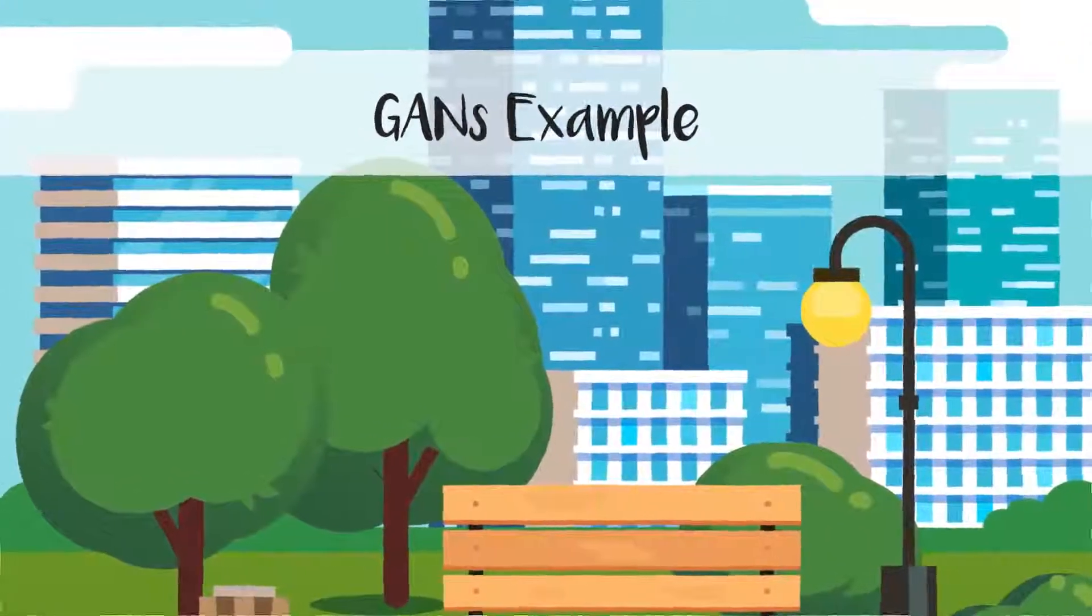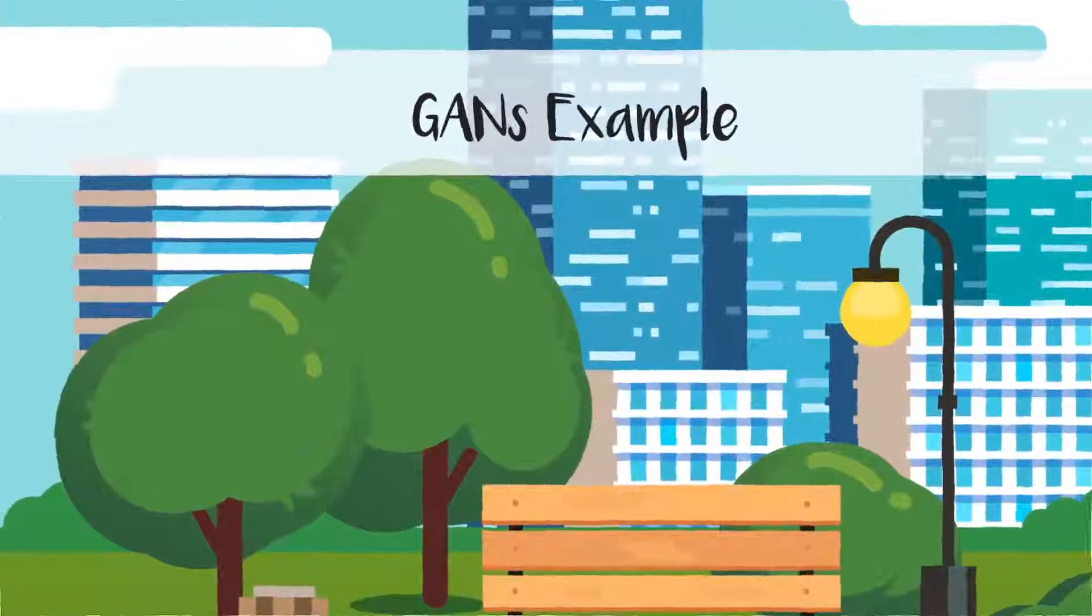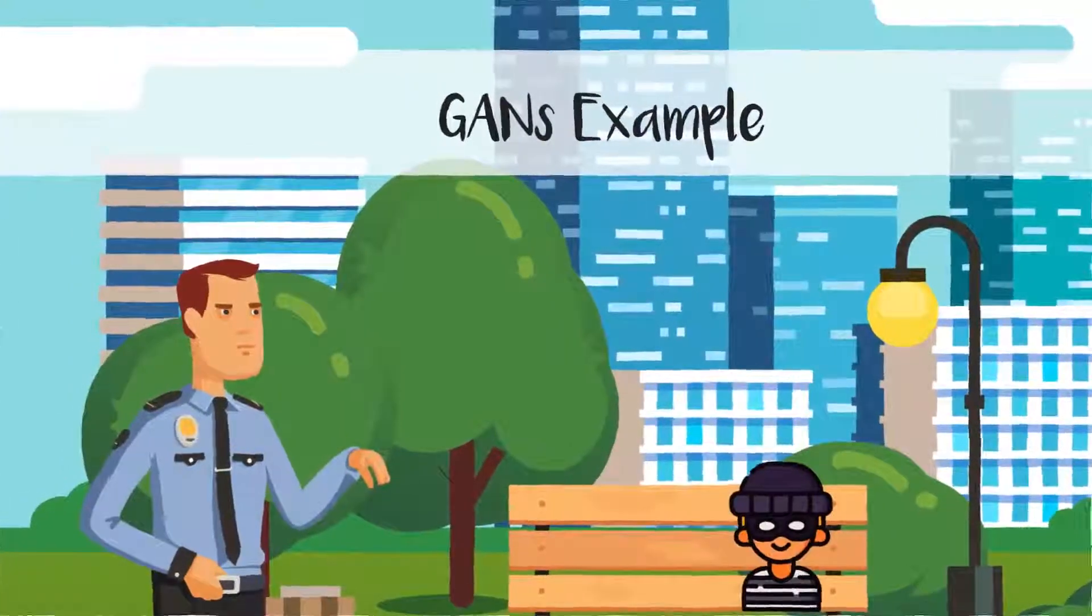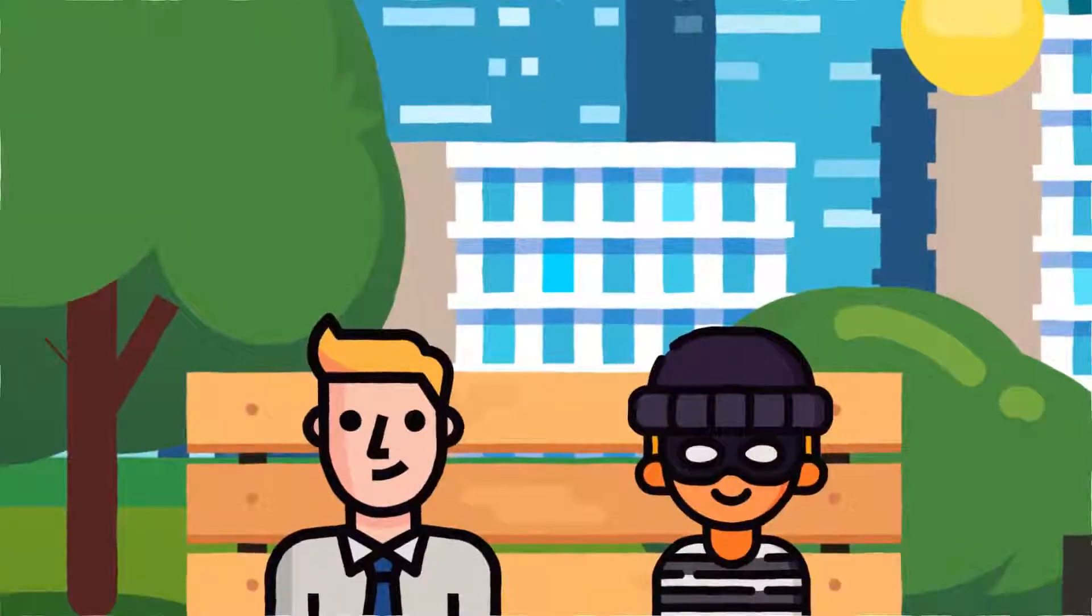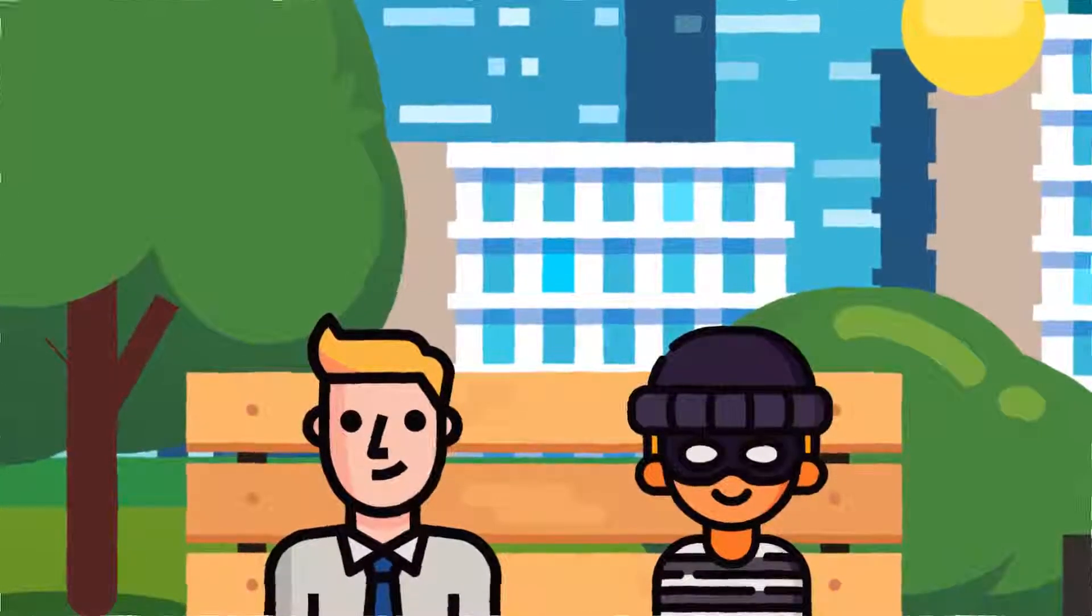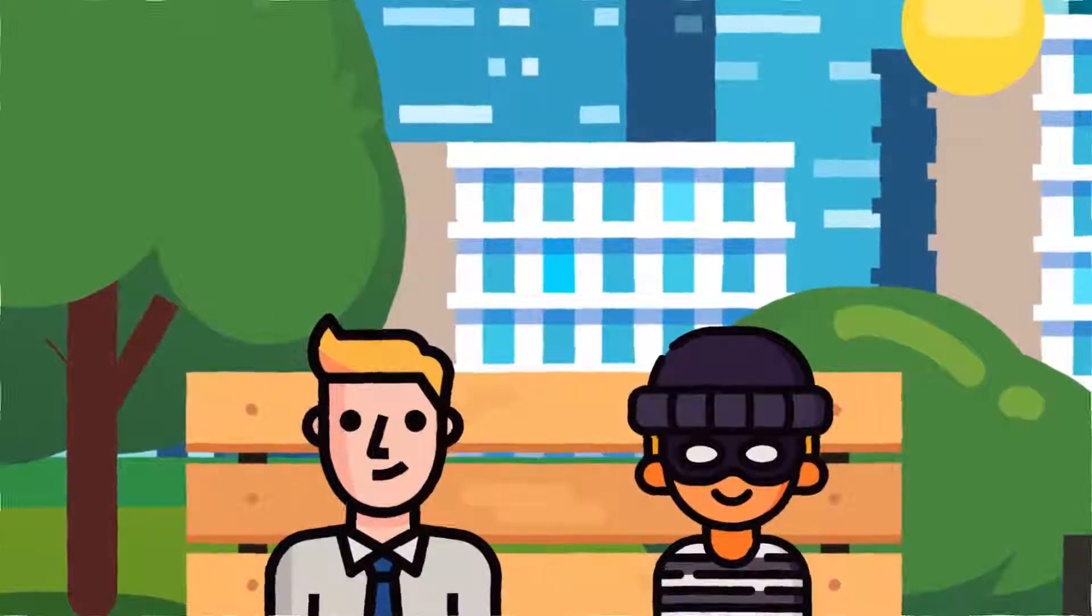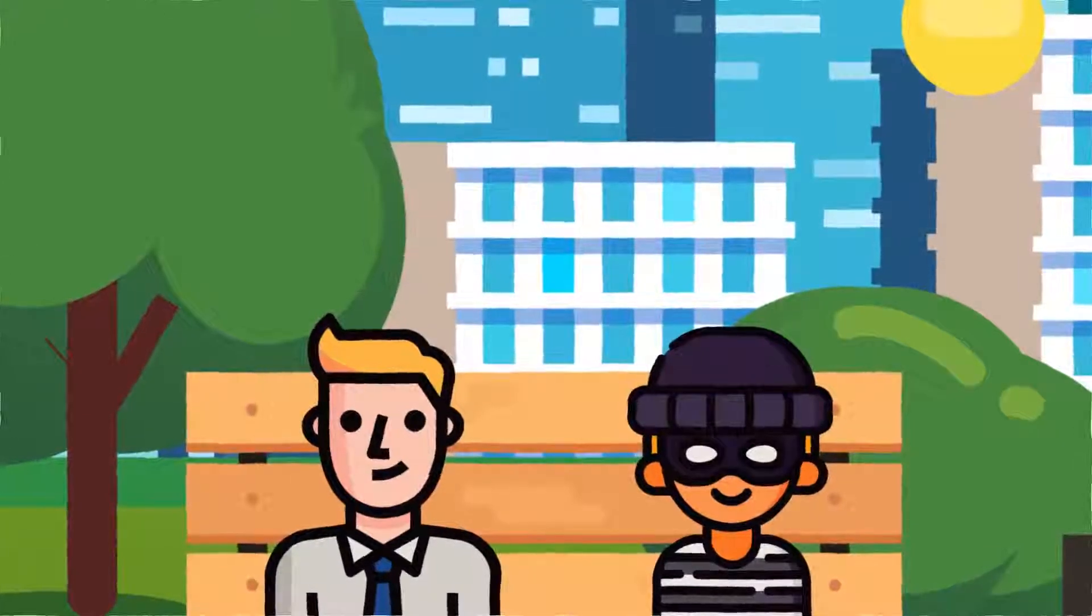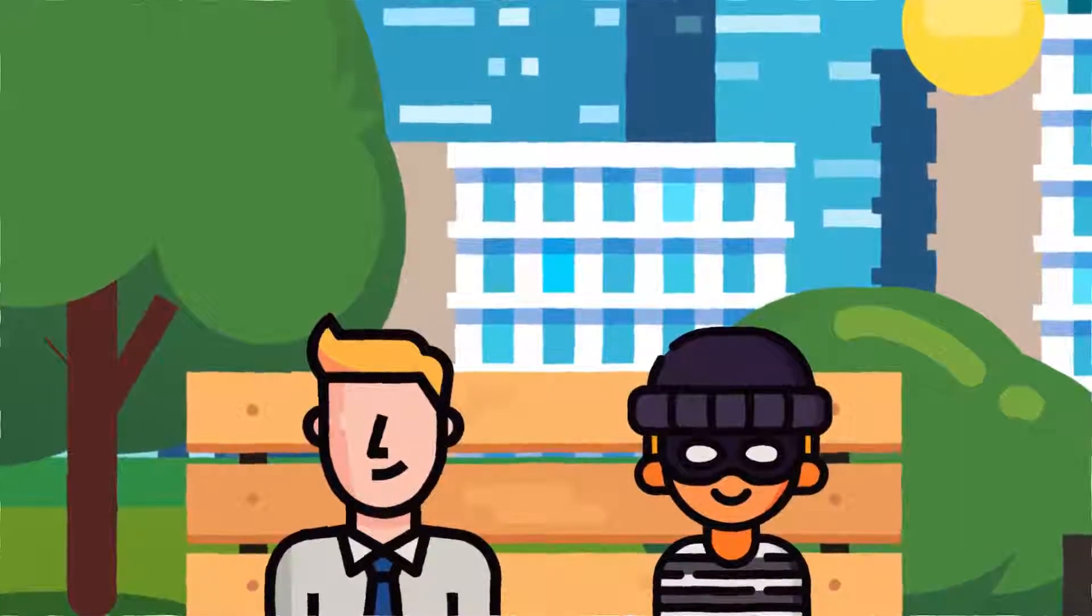Ian Goodfellow describes the process with an apt example of cop and thief. The thief tries to fool the cop into believing he has good intentions—that's the role of the generator. On the other hand, the cop tries to separate the thief from the innocent muggles. That's what the discriminator does.